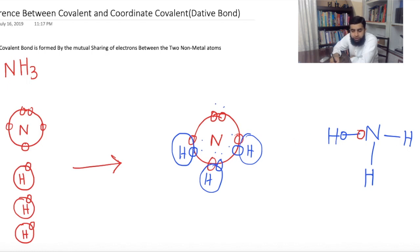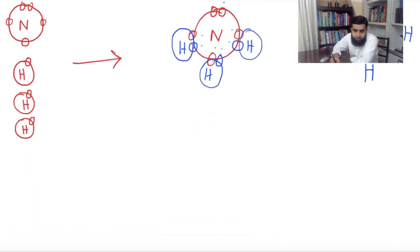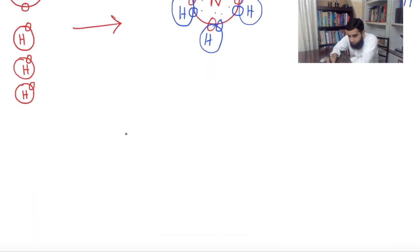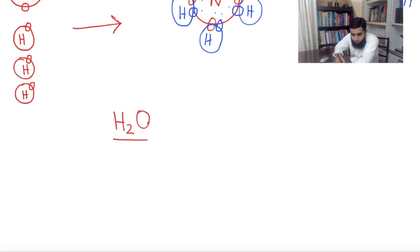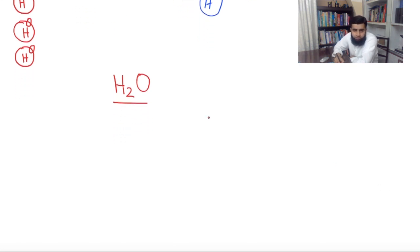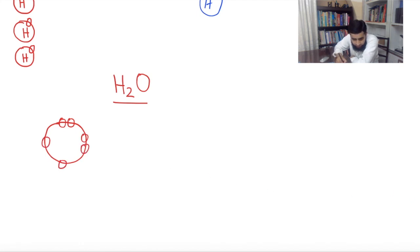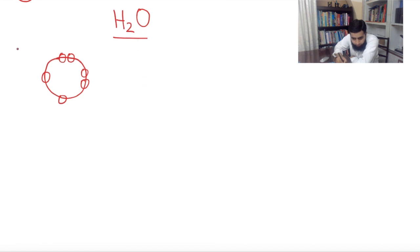Now the second example is H2O, water. In H2O, what is the central atom? Oxygen. Oxygen belongs to which group? Oxygen belongs to group six, so oxygen has six electrons in its outermost shell. This oxygen is unstable because it does not have eight electrons in its outermost shell.